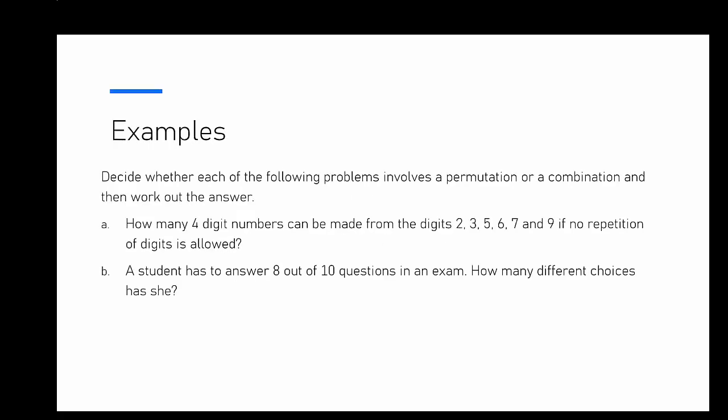Our first example is deciding whether a problem involves a permutation or a combination, then working out the answer. We have: how many four-digit numbers can be made from the digits 2, 3, 5, 6, 7 and 9 if no repetition of digits is allowed? The number 2, 3, 5, 6 is very different to 6, 5, 3, 2, so the order is really important — we're definitely looking at a permutation rather than a combination.